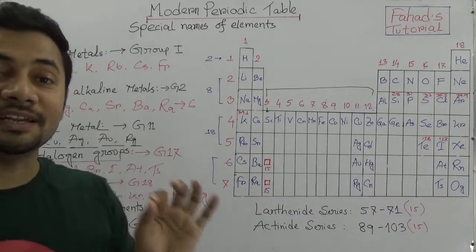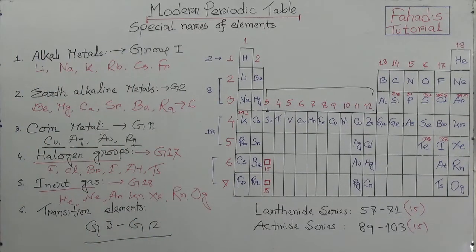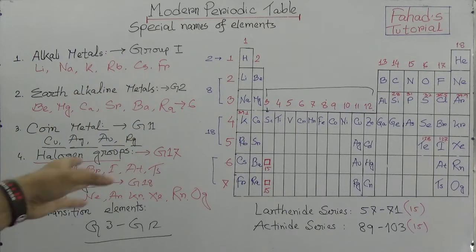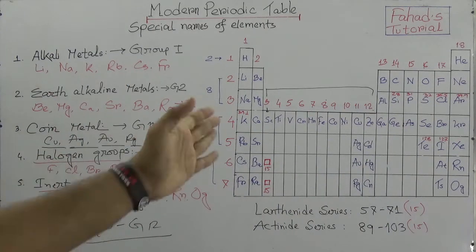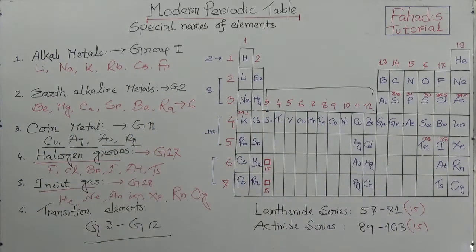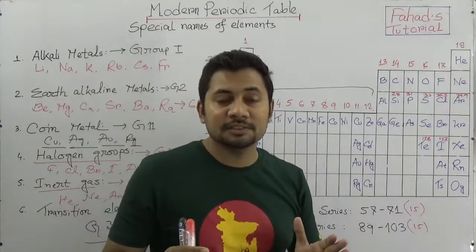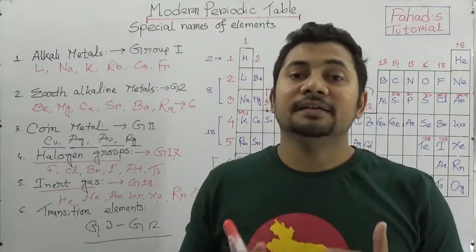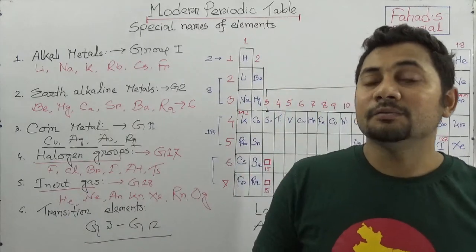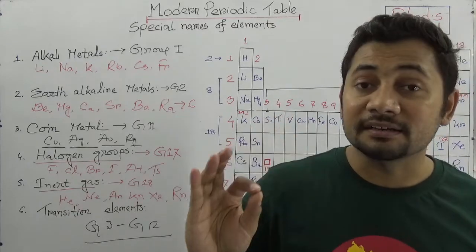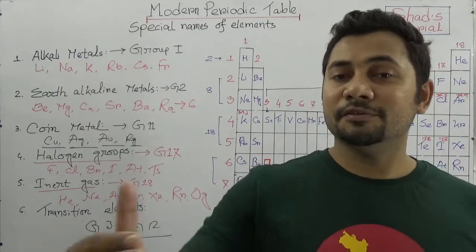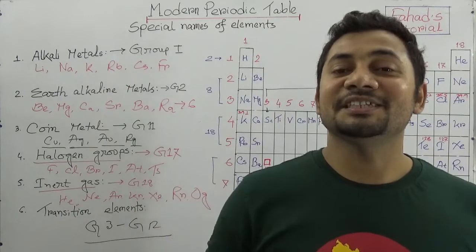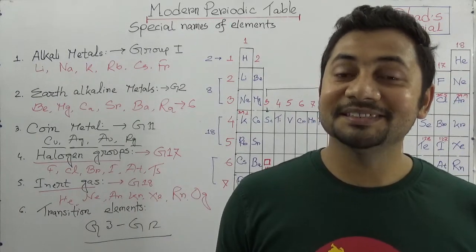So in this video, the special names covered are: alkali metals are group one, alkaline earth metals are group two, coin metals are group eleven, halogens are group number seventeen, inert gases are group number eighteen, and transition elements are group number three to group number twelve. I hope you understand these special names, why they are called special names, and what elements fall under each group. I am coming with the next videos regarding transition elements. See you in the next class. Stay well, stay blessed. Bye bye.